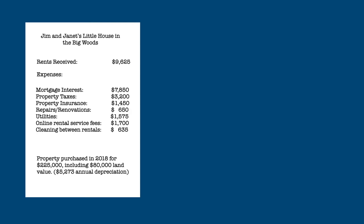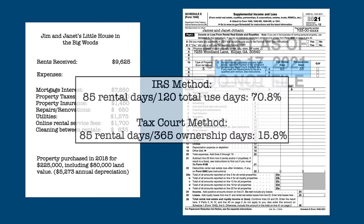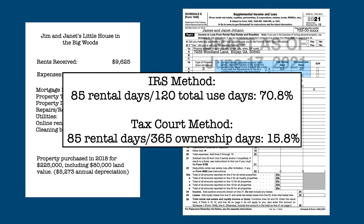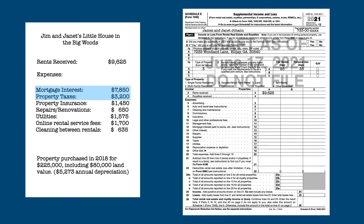Let's look at Jim and Janet's Schedule E. The number of rental and personal use days are listed on line 2. They can allocate 70.8% of the expenses to rental income using the IRS method and 15.8% of the expenses using the tax court method. Since Jim and Janet used the tax court method the second year the property was in service, they will use that method this year. Jim and Janet enter their total rental income on line 3 of the schedule, apply the tax court percentage to the mortgage interest and property taxes, and enter those amounts on the appropriate lines. The remaining amounts would be listed on their Schedule A as itemized deductions.